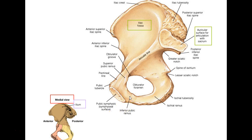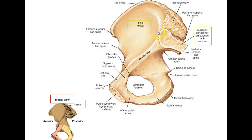Now we've flipped the bone over, so you're looking at the inside. There's the iliac fossa. For females, the ilia are flared out laterally to make room for the baby.